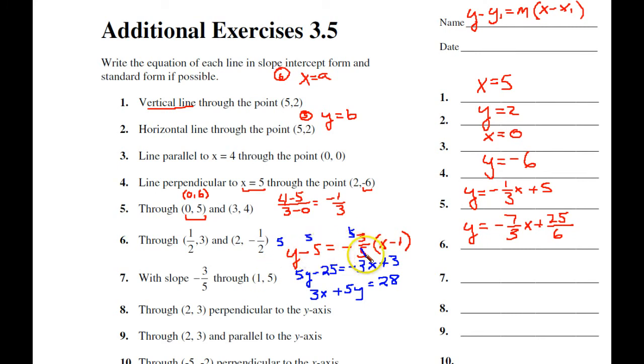I'm going to get rid of all the fractions by multiplying each term by 5. So, 5y minus 25 equals, now the 5s cancel out, negative 3 times x, negative 3x, negative 3 times a negative 1 is a positive 3. I'm going to transpose the negative 3x to the other side, the negative 25 to the other side, and now I have this is in standard form.